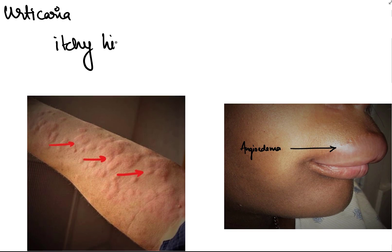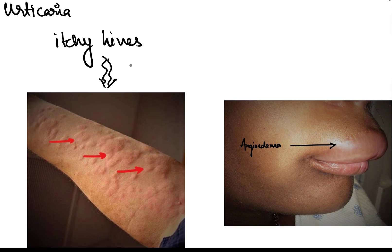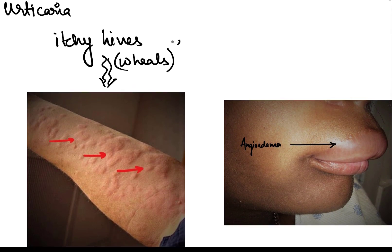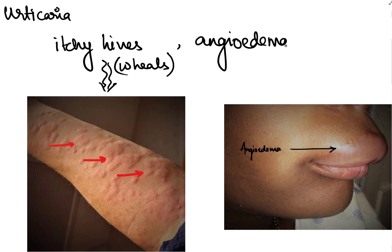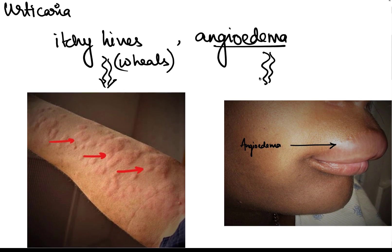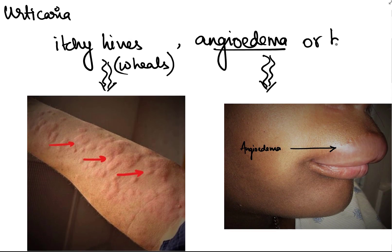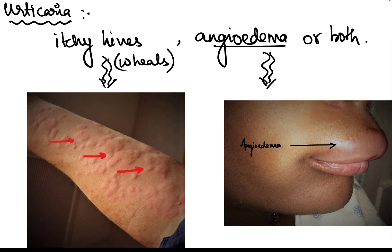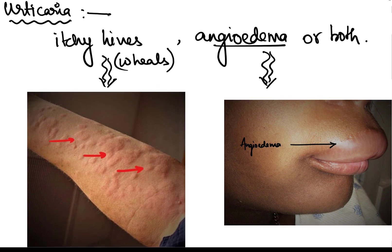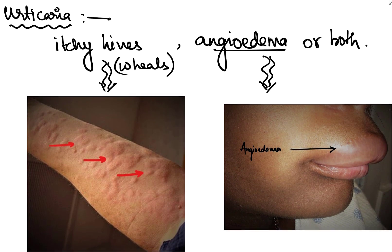As you can see in this image, these are itchy hives or wheals. Along with itchy hives, angioedema — as you can see in this image, a patient is having swelling of the lip — so angioedema or both. Urticaria is a dermatological disorder characterized by either itchy wheals or hives, angioedema, or both.